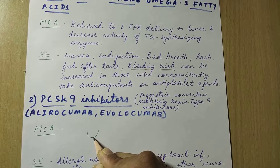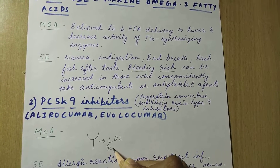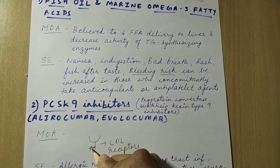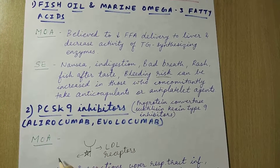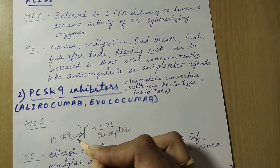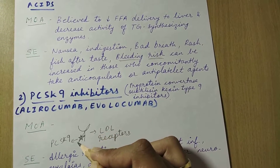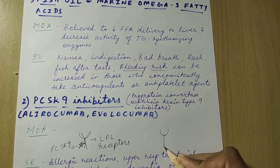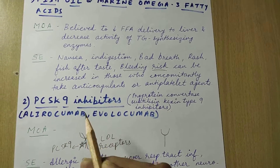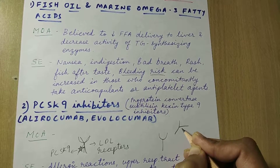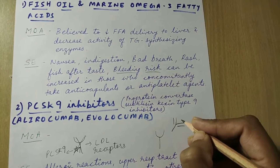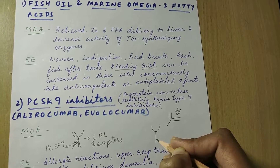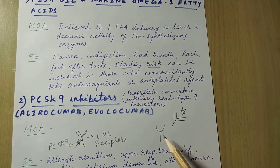These are LDL receptors, and these are PCSK9 enzymes. When PCSK9 combines with an LDL receptor, it destroys it. PCSK9 inhibitors are humanized monoclonal antibodies that bind with the PCSK9 enzyme, so the PCSK9 enzyme won't be able to reach the LDL receptor. Thus, PCSK9 inhibitors reduce the destruction of LDL receptors.